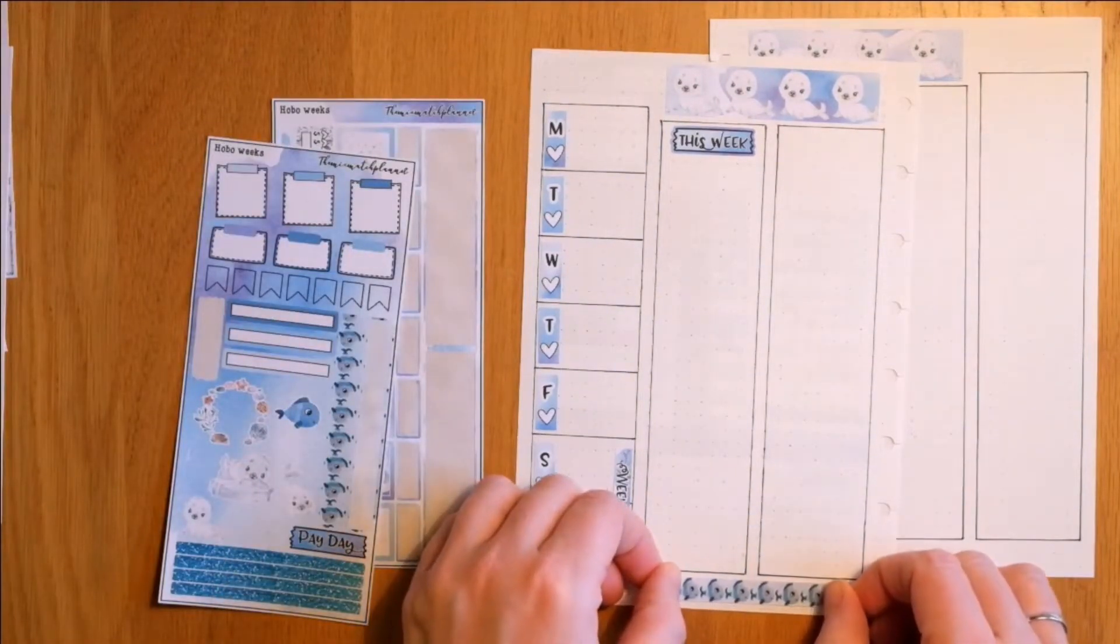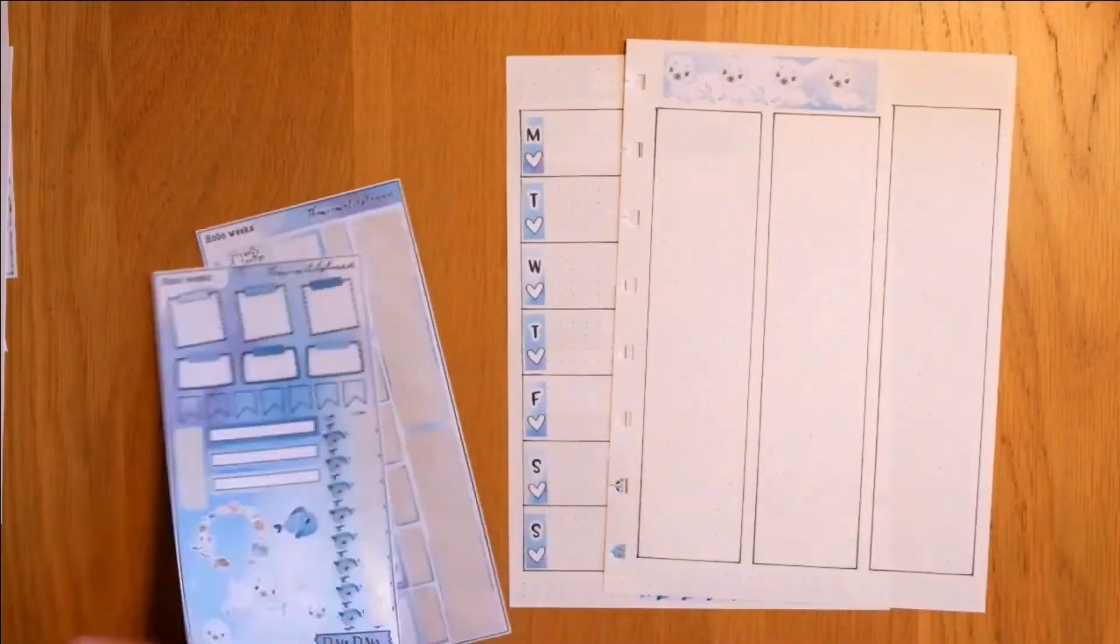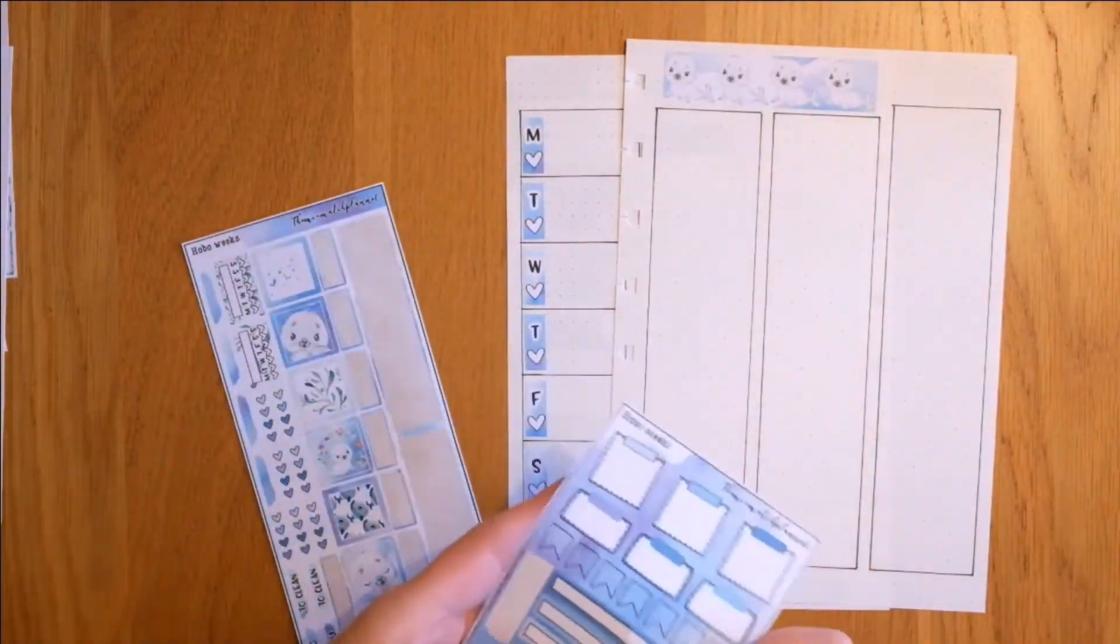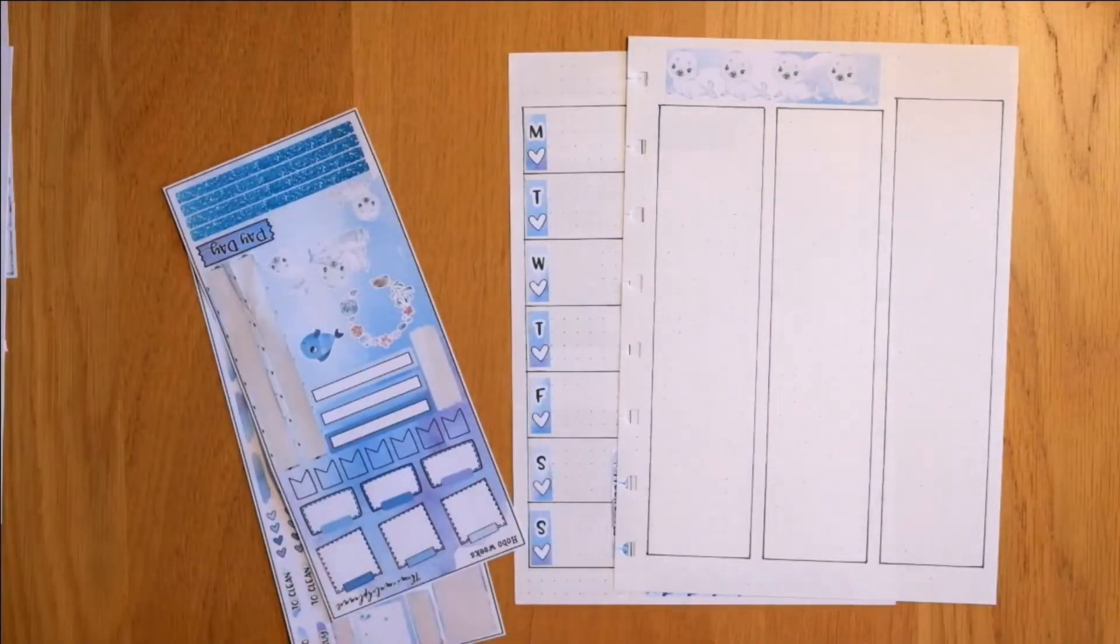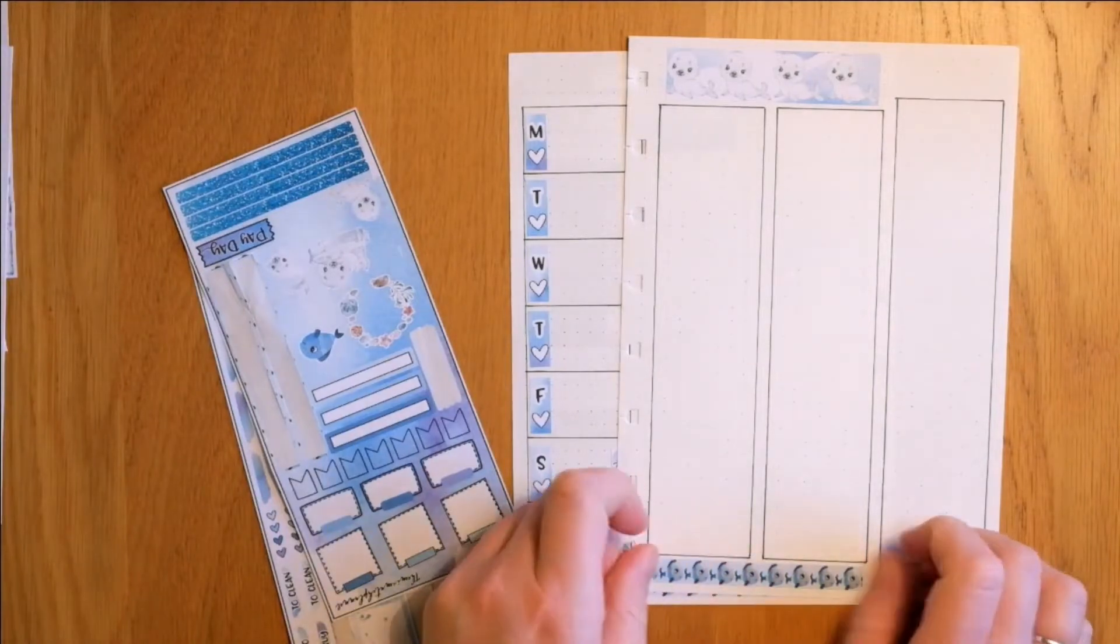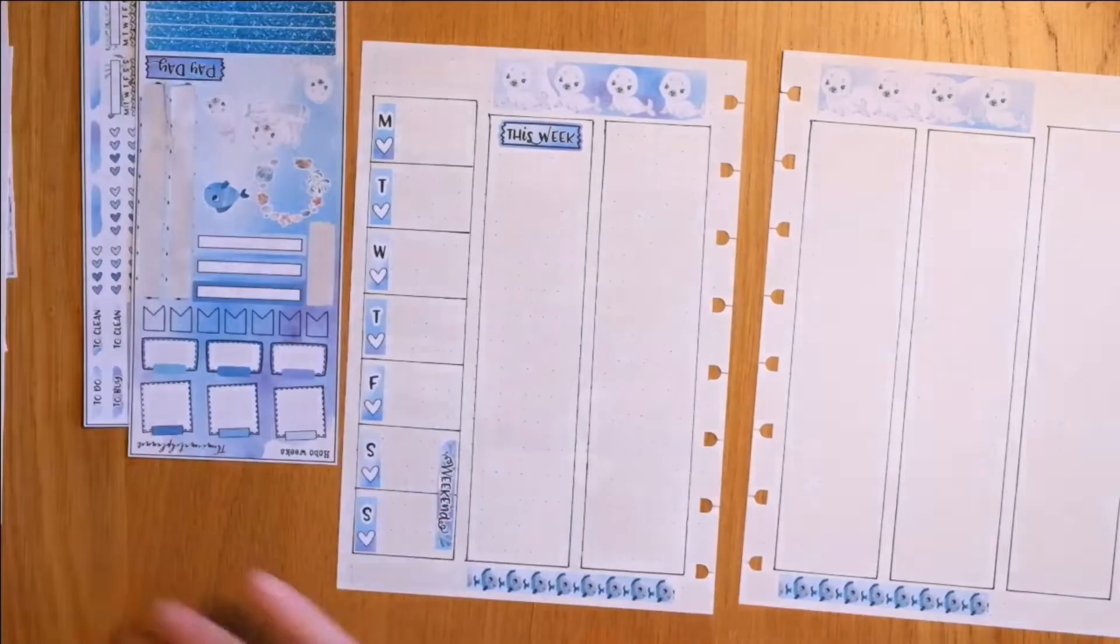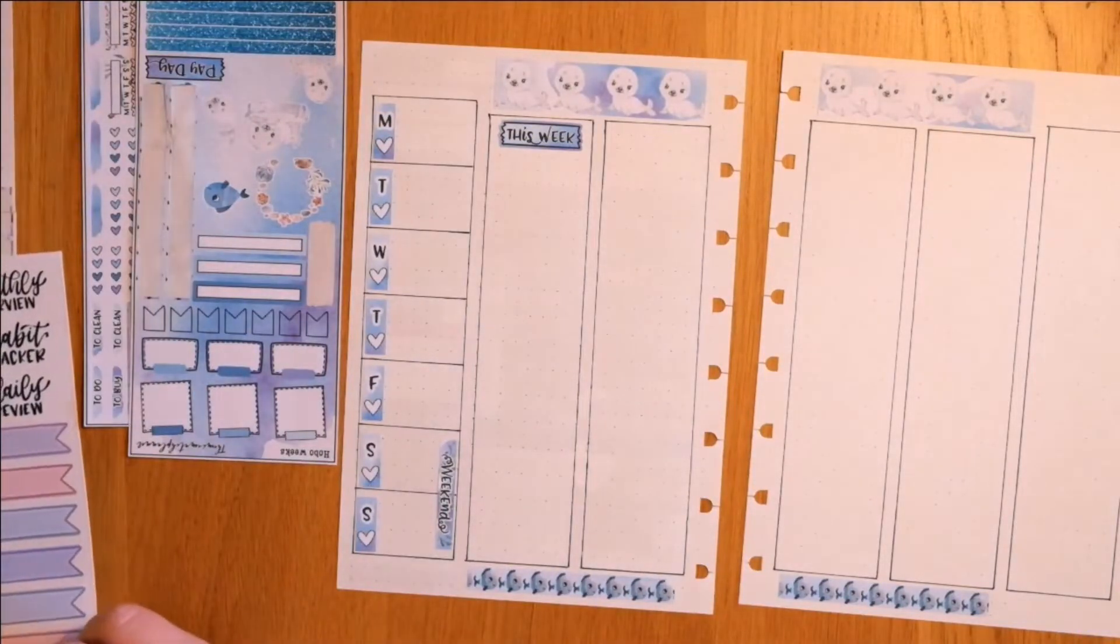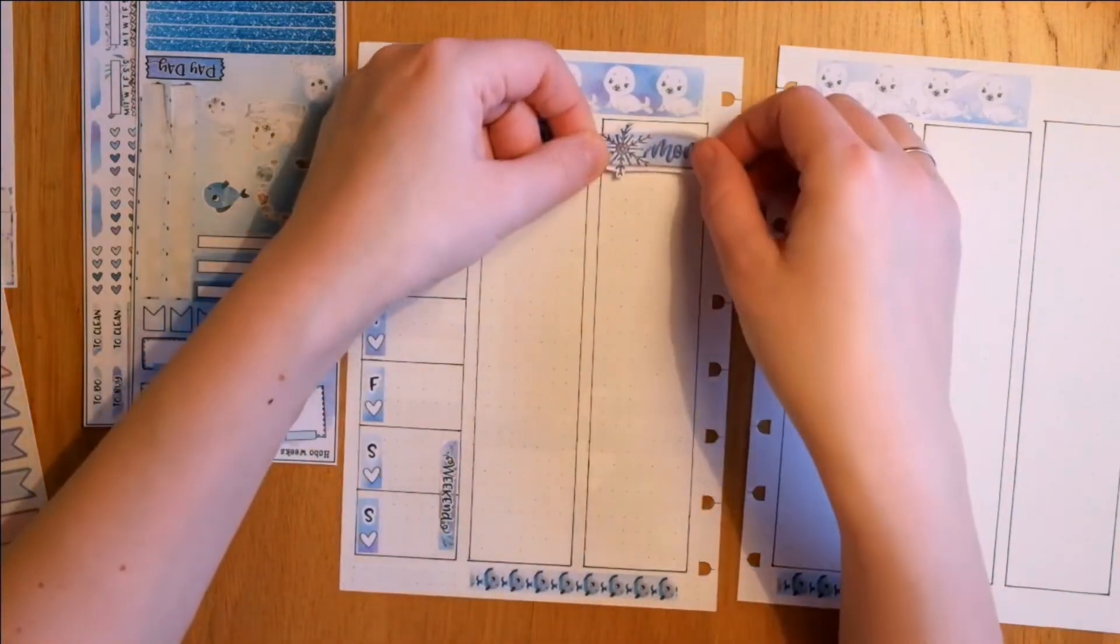I'm using the washi strips on the kit. As you can see, they don't cover the whole page, but they do cover about two columns. So I made the upper part a little bit lower than usual to fit the four squares that are needed for the washi tape. Or washi sticker, whatever you call it.